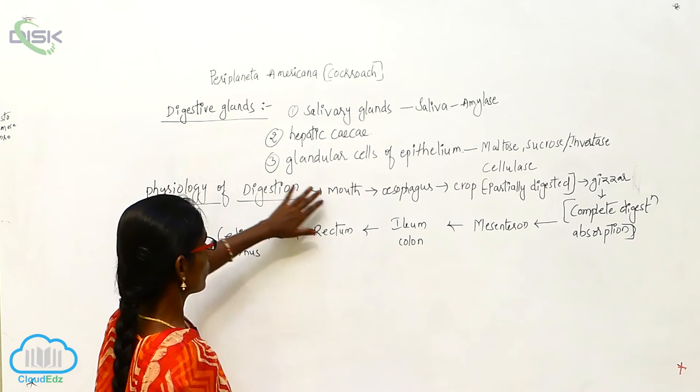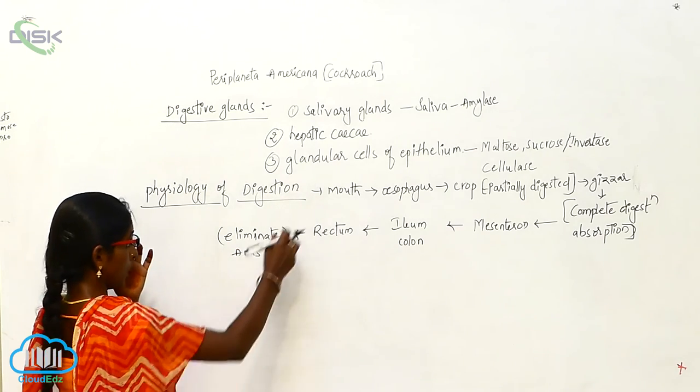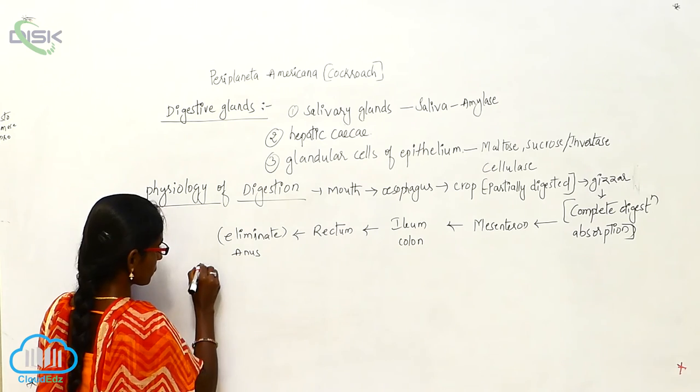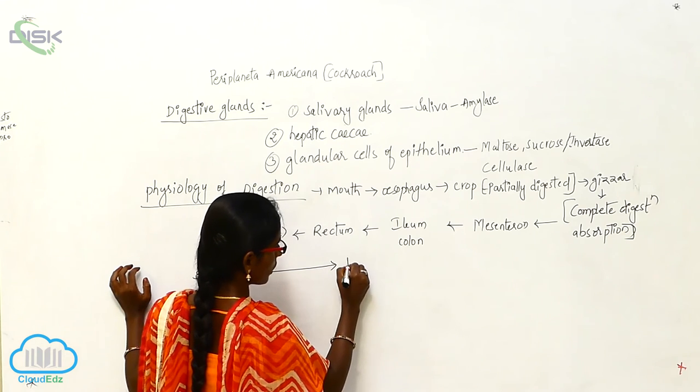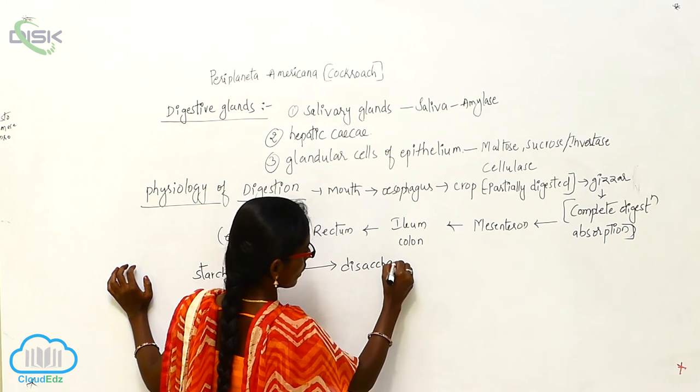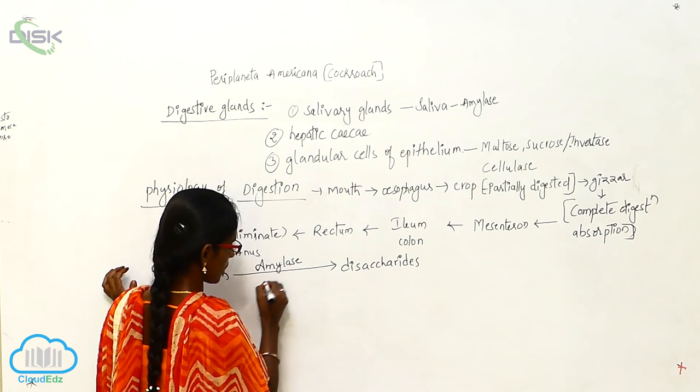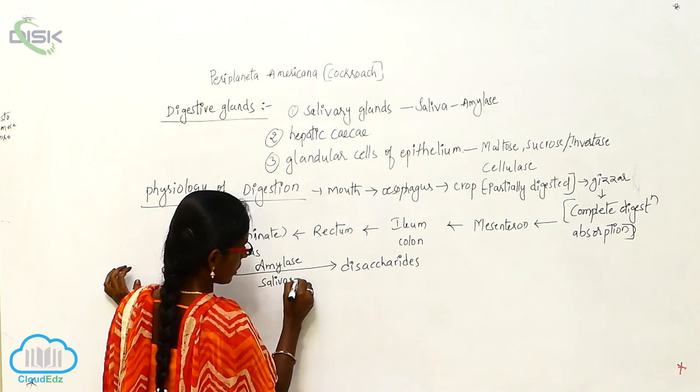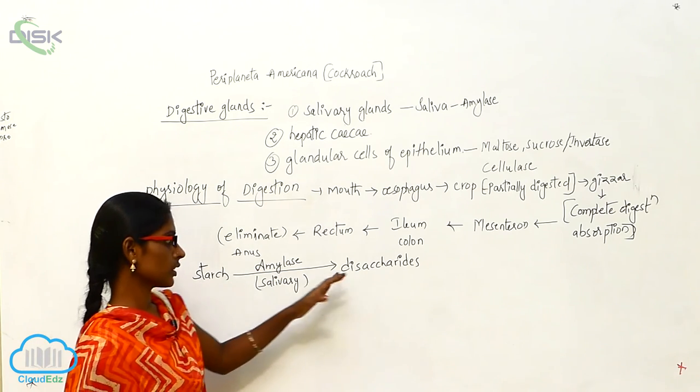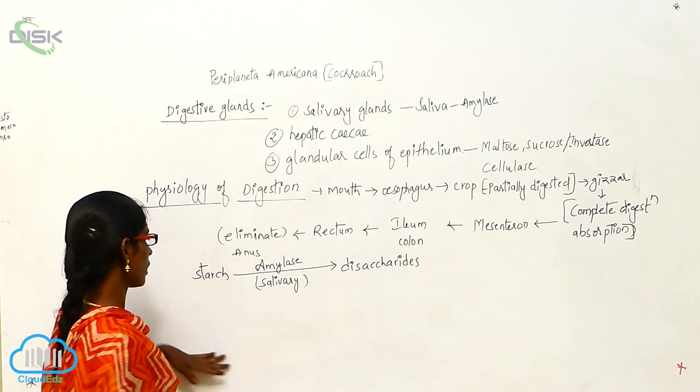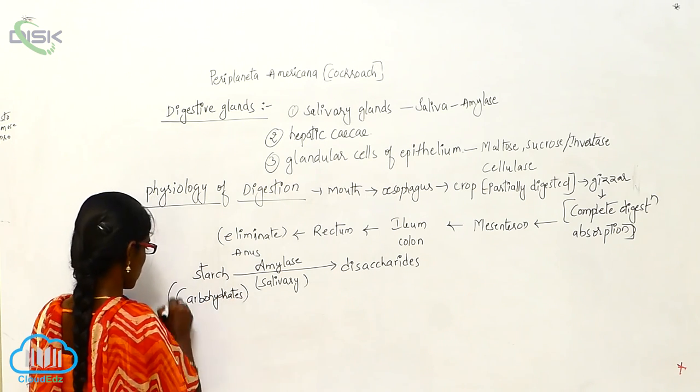So, here the food material goes to esophagus. From that esophagus, in the esophagus, the starch will be converted into disaccharides. By the action of amylase, that is the salivary amylase. By the action of amylase, the starch is converted into disaccharides or this is called carbohydrates.